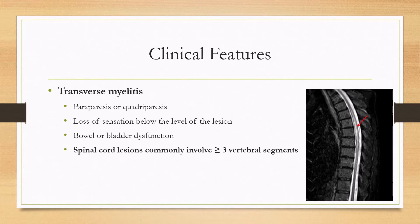For transverse myelitis, depending on the level of the lesion, you may have either paraparesis or quadriparesis. There can be loss of sensation below the level of the lesion as well as bowel and bladder dysfunction.